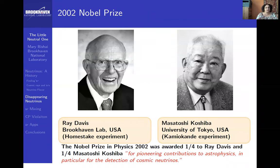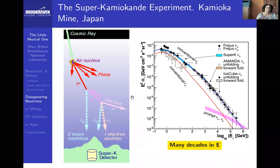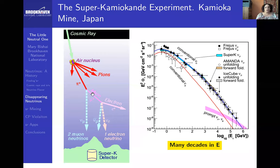In Japan, a similar experiment was taking place. They were studying neutrinos that come from the decays of pi mesons in the atmosphere. A very high energy cosmic ray — a proton or iron nucleus — comes in, interacts with nitrogen in the air, and produces pi mesons. These decay 99% of the time into a muon and a muon neutrino. The muon itself decays after 2.2 microseconds into two muon neutrinos and an electron. So you have a flux of muon neutrinos and electron neutrinos.